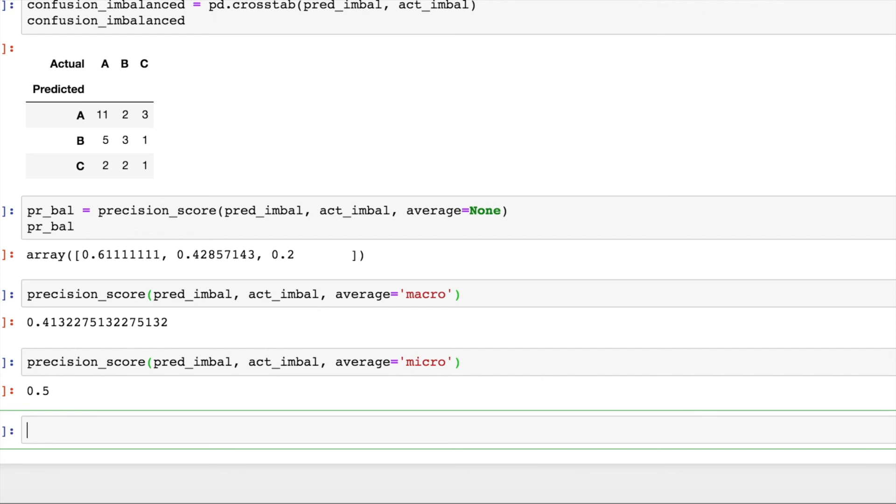Even though this classifier is skewed towards class A or it has more samples towards class A, it's still doing a decent job which my macro precision score is not able to capture. So, a thumb rule which I could recommend is, if you have class imbalances for a multi-class problem, then always go in for micro precision, micro recall and micro F1 score when you have to evaluate a classifier.